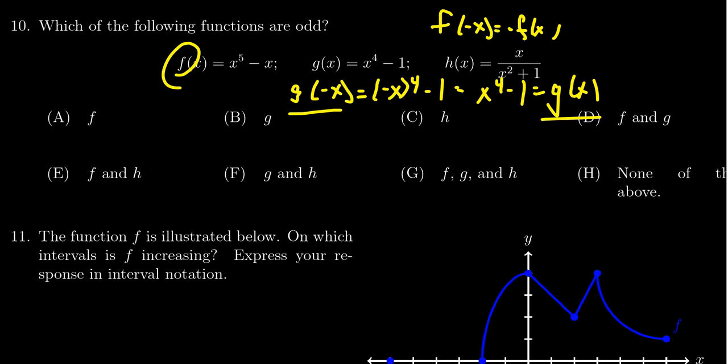A reflection across the y-axis, that is replacing x with negative x, doesn't actually change the formula, doesn't change the graph. Now we're not looking for even functions we're looking for odd functions, so all we had to determine was that g was not odd. The fact that it's even is not relevant for this question so we will remove g.